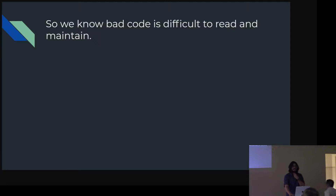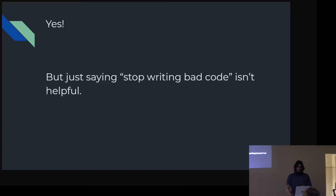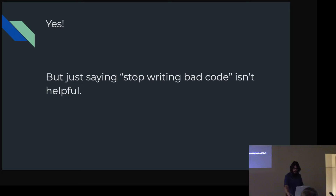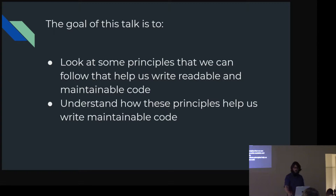If bad code is defined as being something that's difficult to read and maintain, then you can just say that good code is something that's readable and maintainable. But it's not helpful to just say 'don't write bad code' — it's like telling a bad driver to just be a better driver. The goal of this talk is to look at some principles that can be followed to help us write readable and maintainable code, and also to go another layer under that and talk about why these principles help.